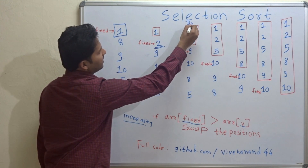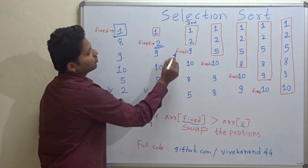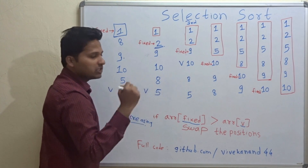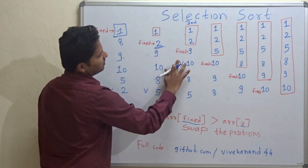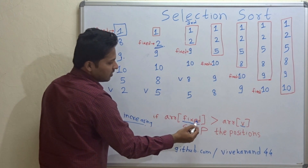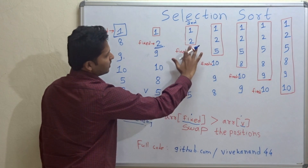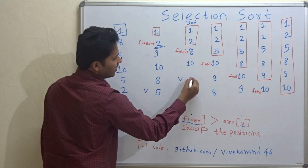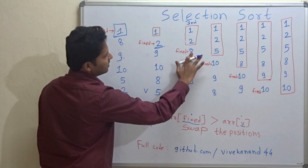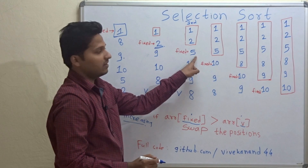This is the third pass. As you can see, the first two positions are sorted. The fixed pointer points to the third position and the variable pointer points to the next position. 9 is compared with 10 — no need of swapping. 9 is compared with 8 — since the fixed position value is greater than the variable position value, we swap. 8 will come here and 9 will come here. Variable pointer increases; now 8 is compared with 5 — there is a need of swapping. So 5 and 8 are swapped, and we got the third smallest element in place.